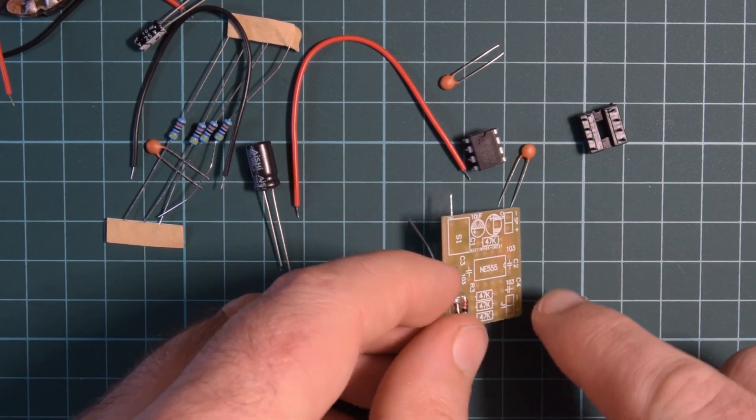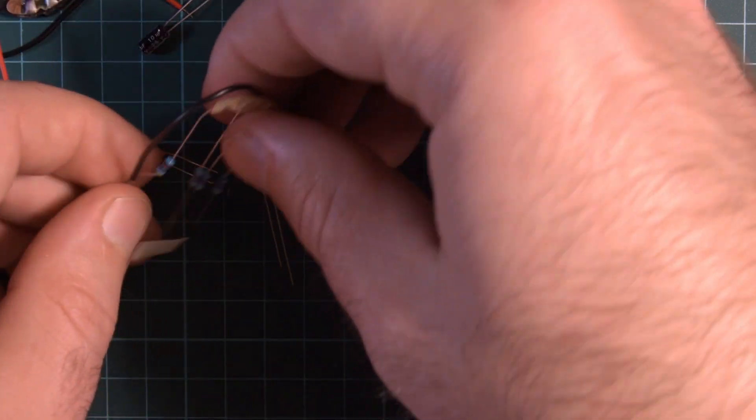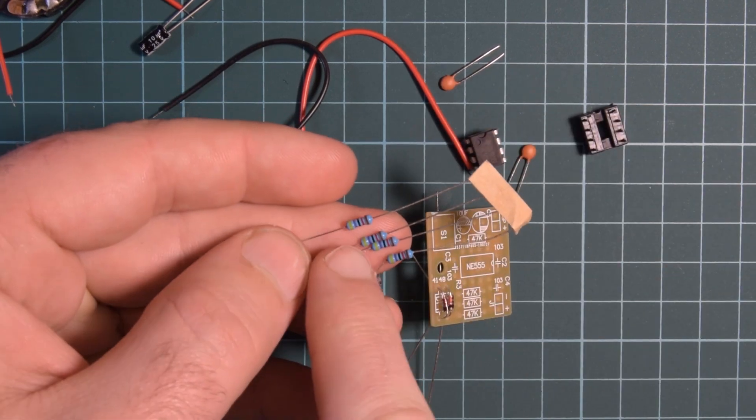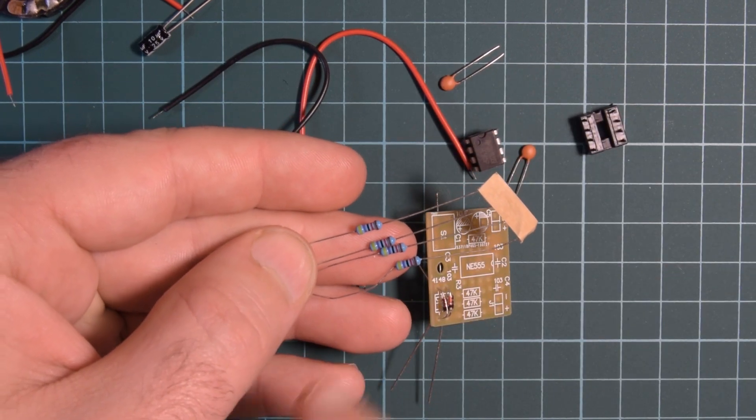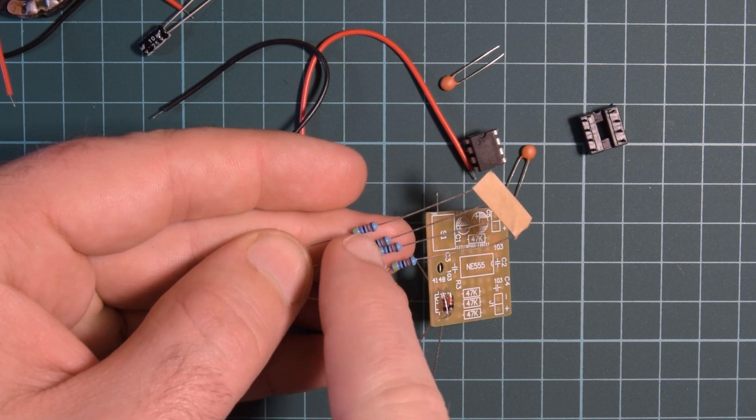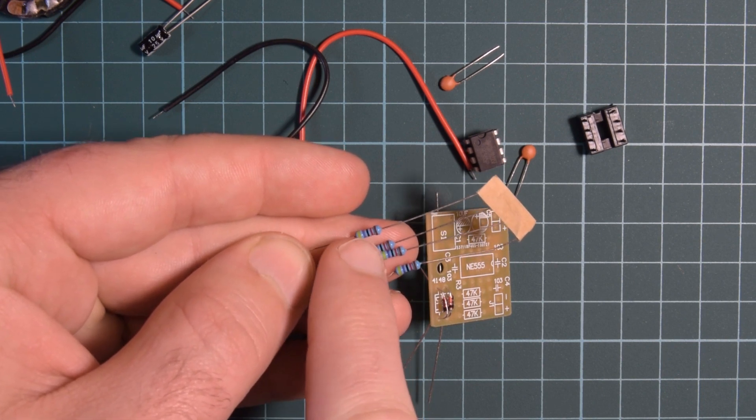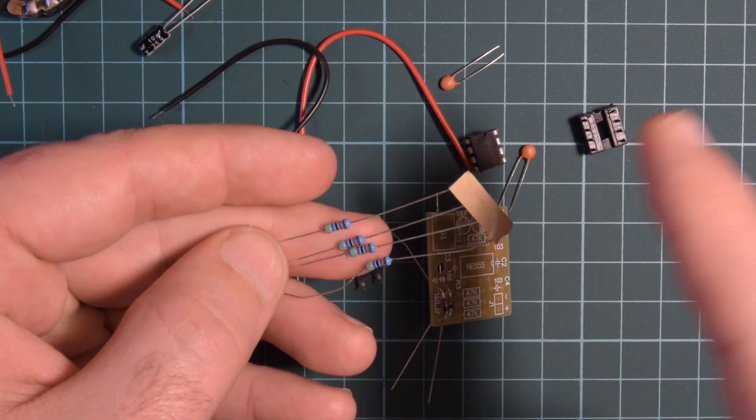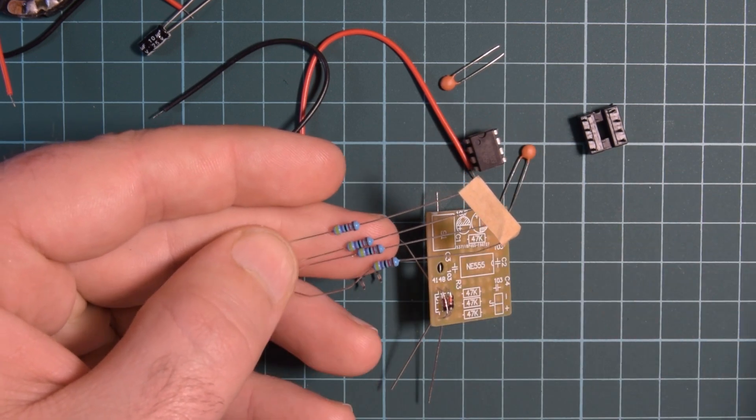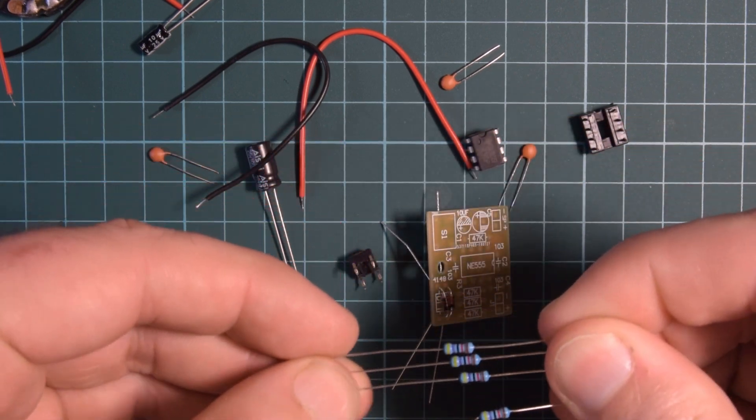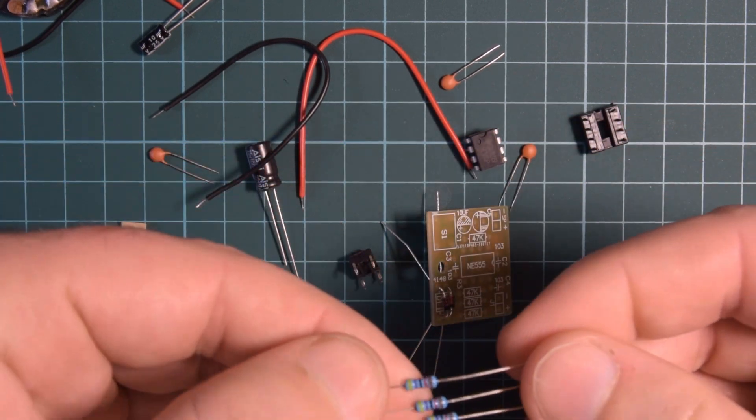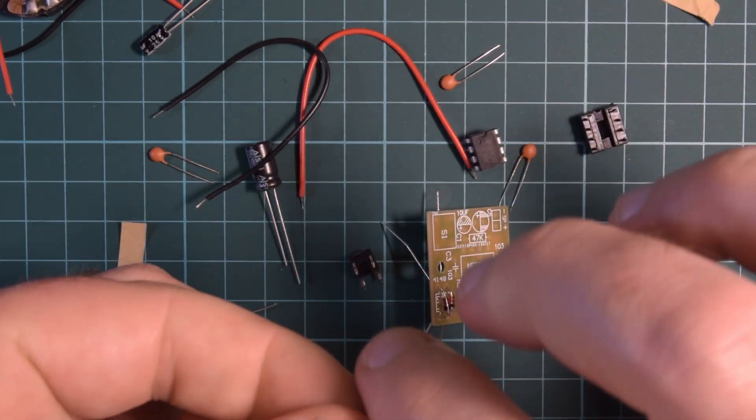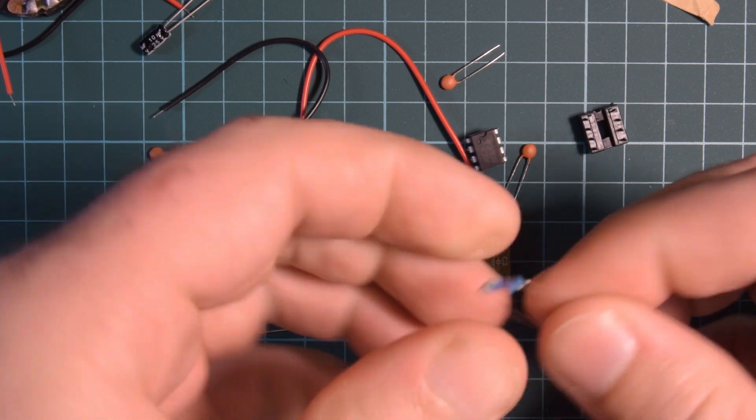Okay now I have four resistors 4.7k and yellow. I always remember yellow is four and purple is seven. So four seven. Black is zero. So 470 and then the red band adds two zeros. So 470 plus two zeros 47k. So that's them.